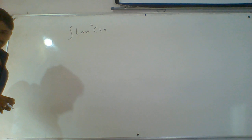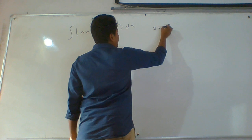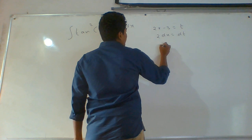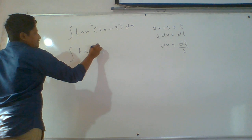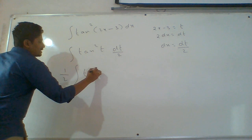Integral of tan square (2x minus 3) dx. Consider 2x minus 3 as t. Apply derivative on both sides: we get 2 dx equals to dt, so dx equals to dt by 2. In the place of 2x minus 3 we put t, so the integral becomes tan square t into dt by 2. The constant 1 by 2 goes outside the integral.